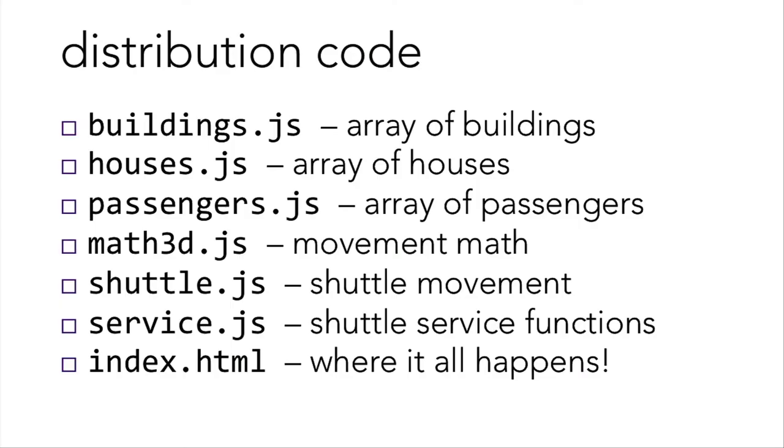Shuttle.js deals with the shuttle's movement. And index.html is the home page where everything happens, where the user is interacting with the site. Service.css is the CSS style sheet, which, in addition to the Twitter Bootstrap library, controls how index.html looks. And then we also have service.js, which contains service functions for the shuttle, and here's where you're going to be filling in some of the to-dos.